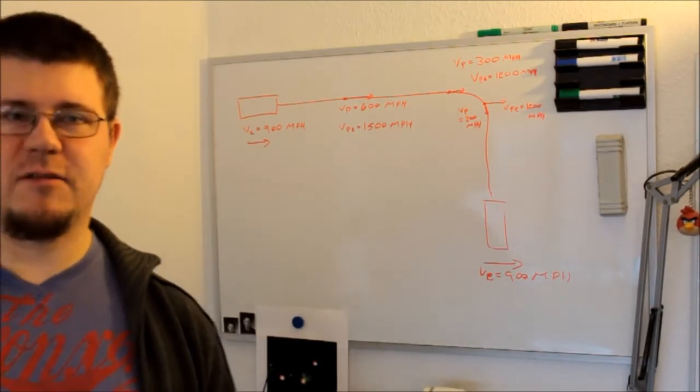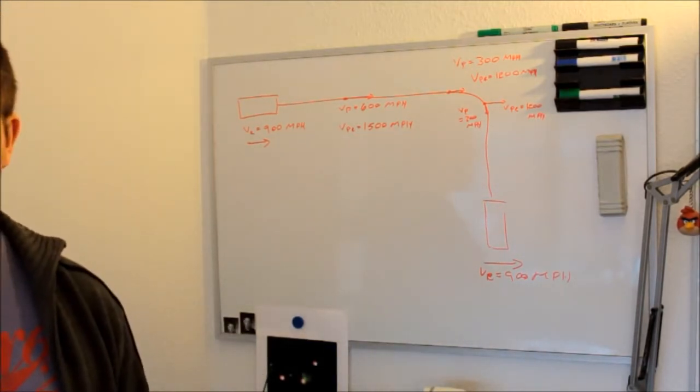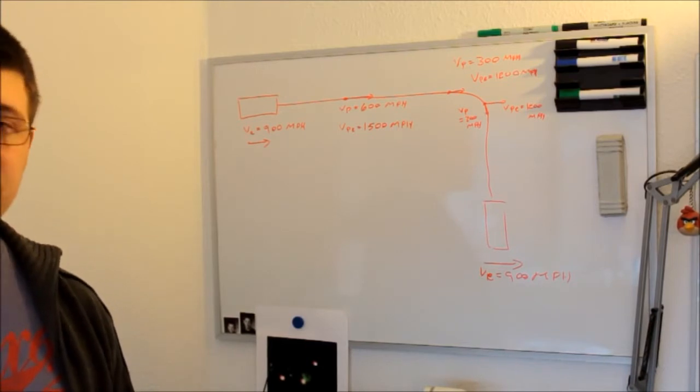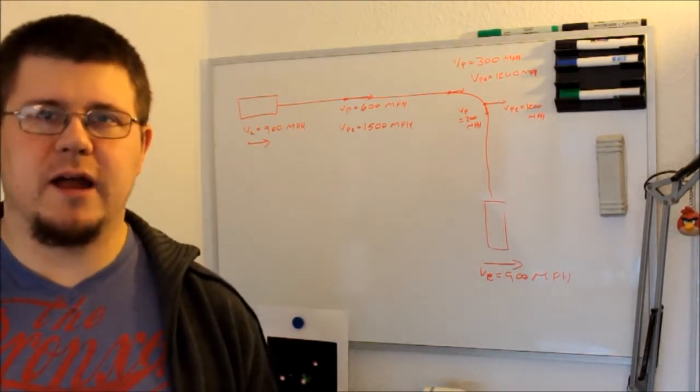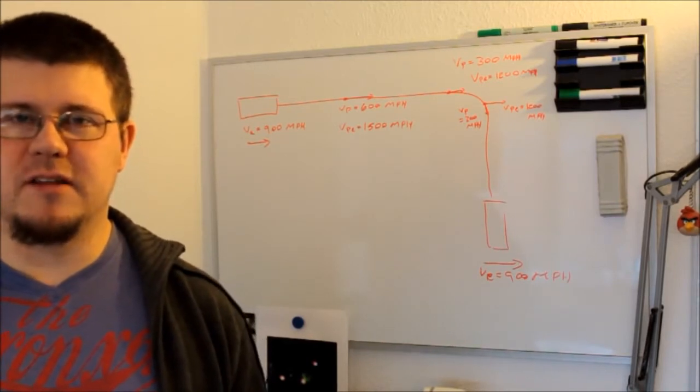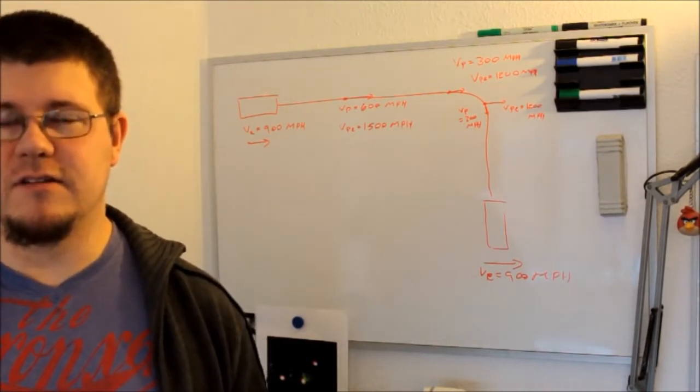The subject is that a guy called Brian Mullen has made some videos that he has put on YouTube where he explains why airplanes can't land on airfields. This is the first video.